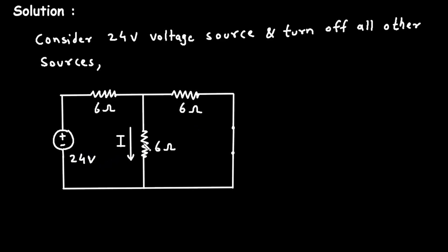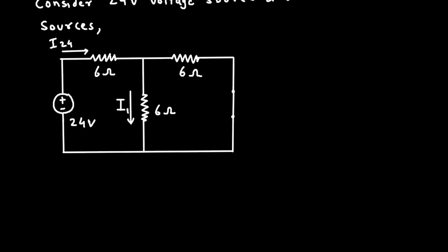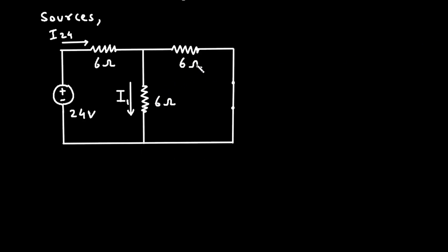Here, this is the current due to this 24 volt, so let's call this current I1. To find I1, we need the total current. First we will find the total current — let's call it I24. We have to simplify this circuit to get the value of I24.